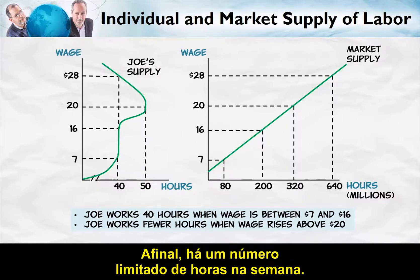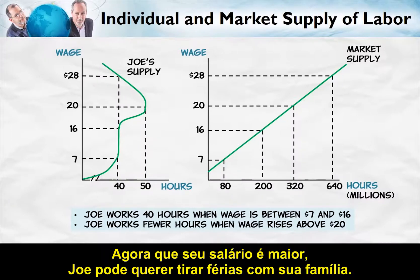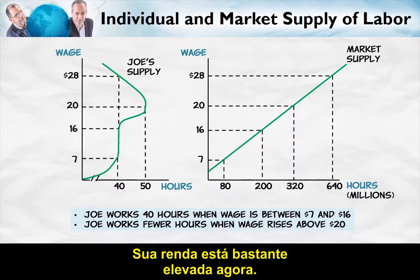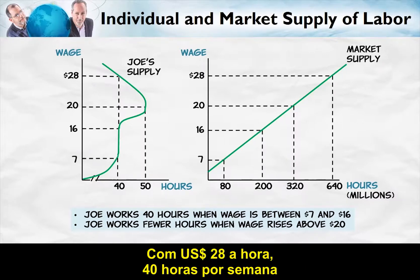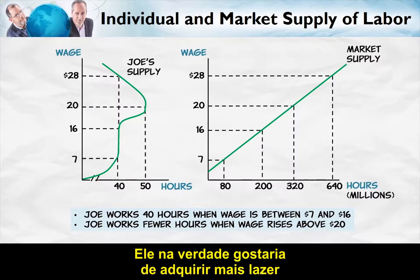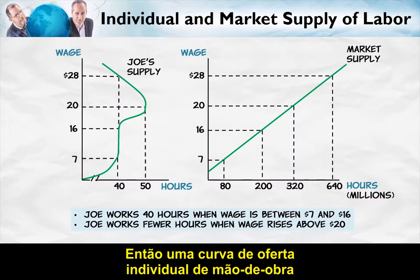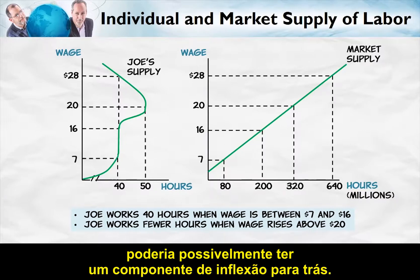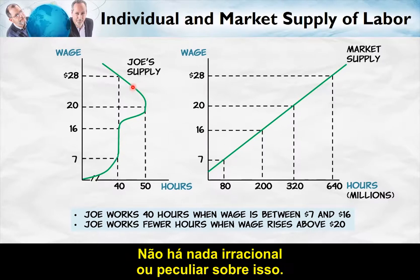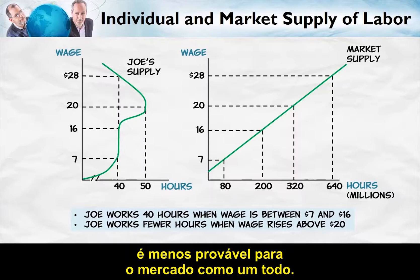After all, there's only so many hours in the week and Joe has other things to do with his time. Now that his wage is higher, Joe might want to take his family on a vacation. His income is already quite high — $28 an hour, 40 hours a week — so Joe may decide he would actually like to work a little bit less and buy more leisure with the income he is earning from his job. So an individual's labor supply curve could possibly have a backward-bending component. There's nothing irrational or peculiar about that.